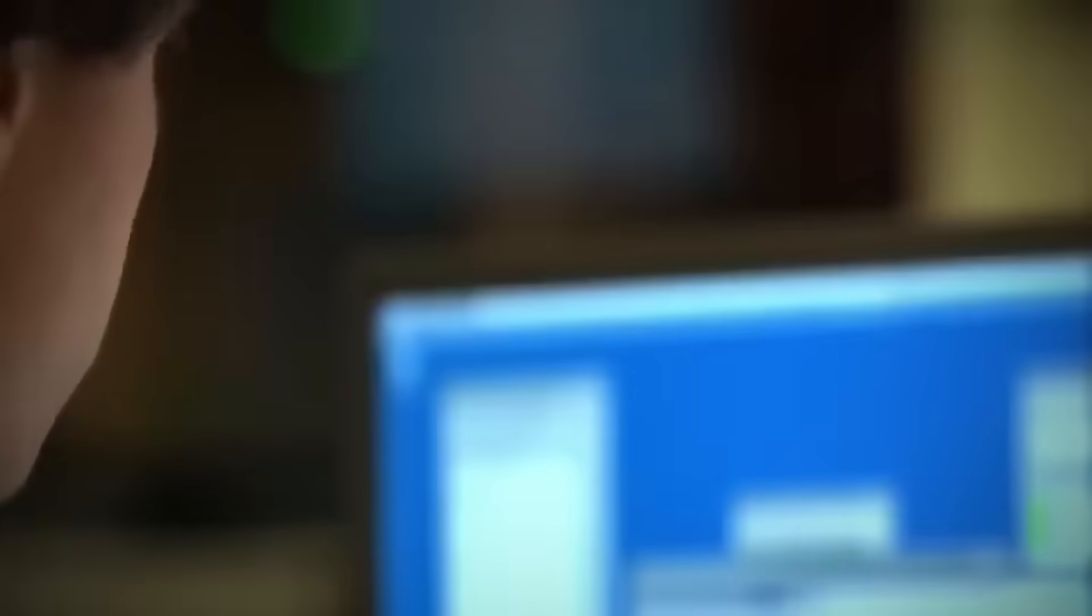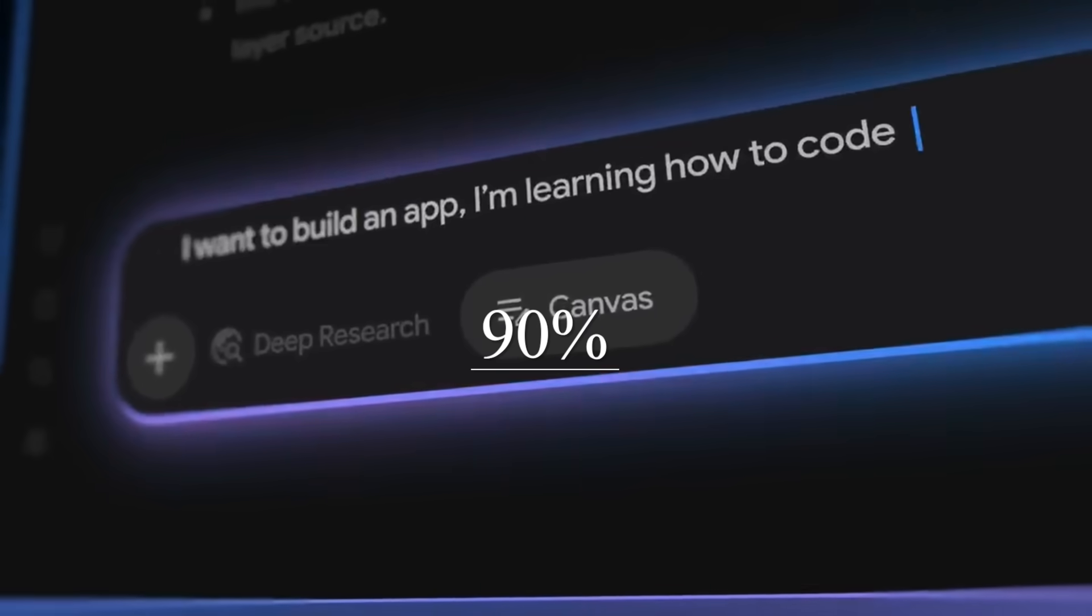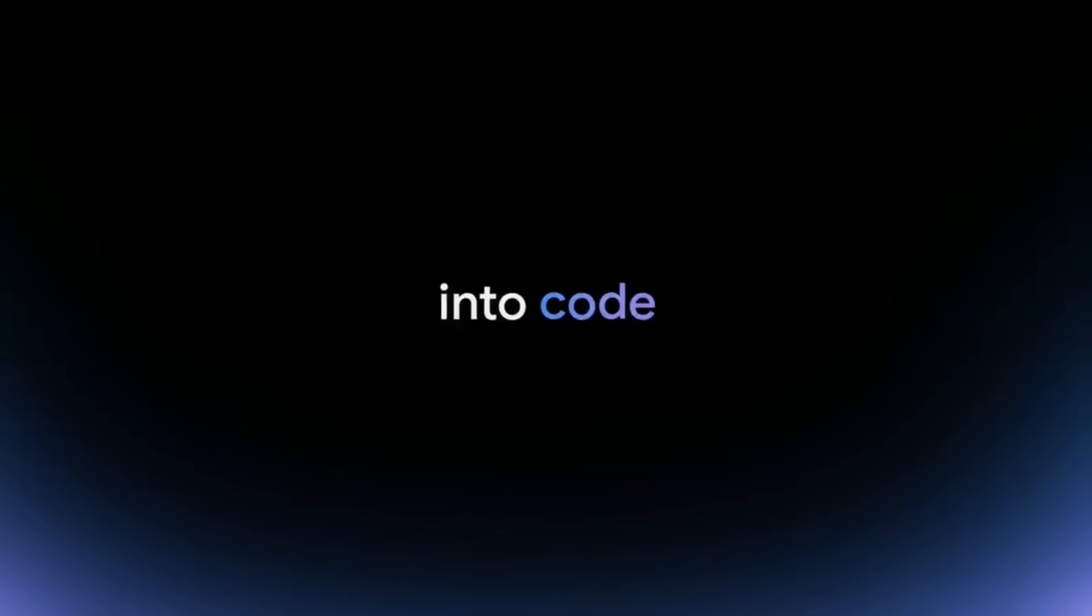Right now, at this very moment, Google's Gemini Ultra is scoring 90% on tests that stump university professors. It's the first AI model to officially outperform human experts on comprehensive knowledge exams. But here's where it gets terrifying.